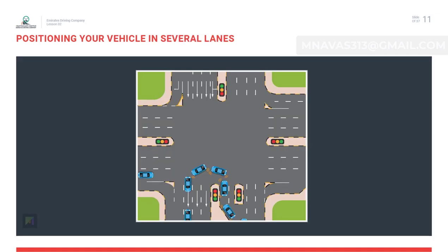Positioning your vehicle in several lanes: whenever you are about to deal with a junction ahead, choose the correct lane for your desired direction well in advance. For turning right, be in the extreme right lane. For going straight, continue in the extreme right lane, which is considered the safest lane. For turning left, move to the extreme left lane. U-turns are only permitted from the extreme left lane.